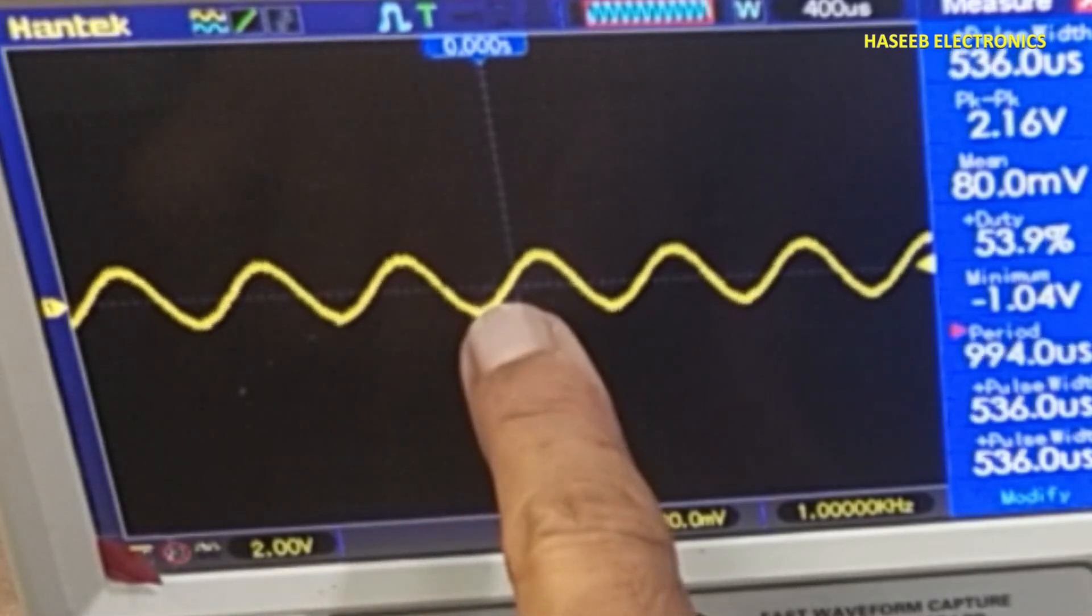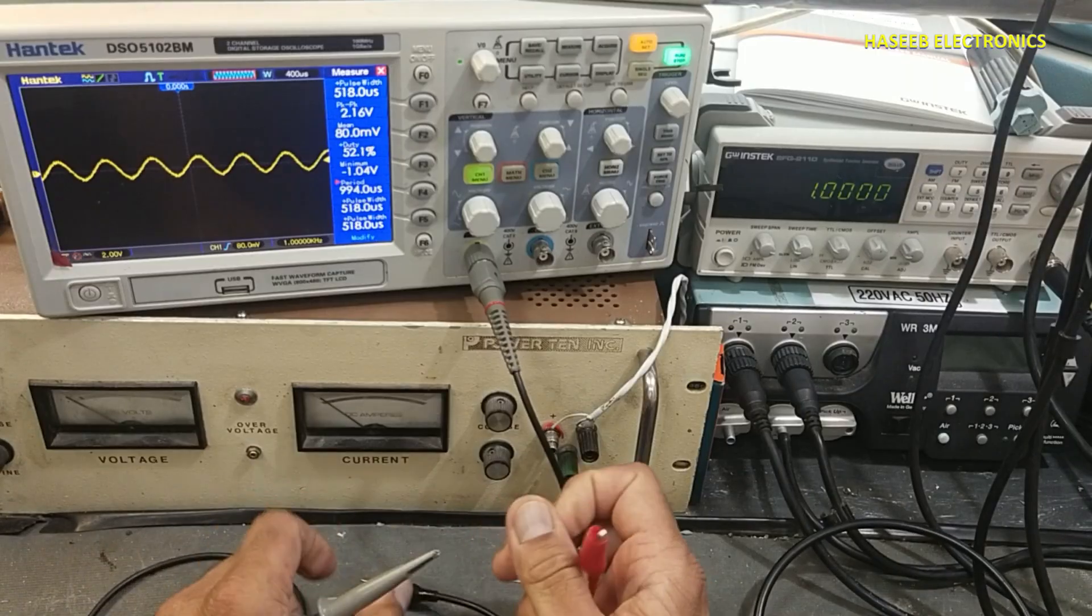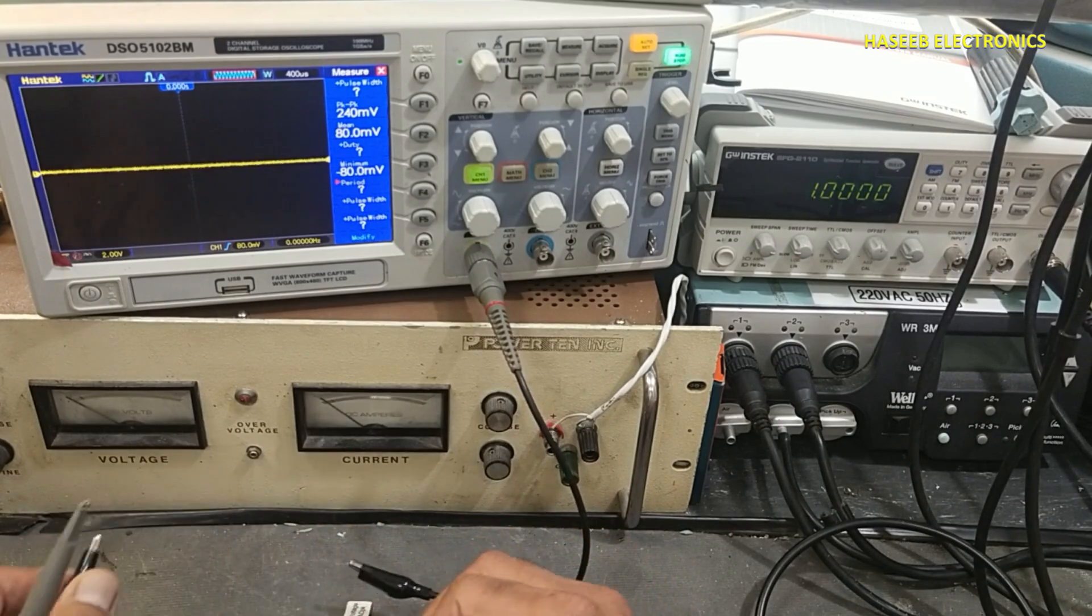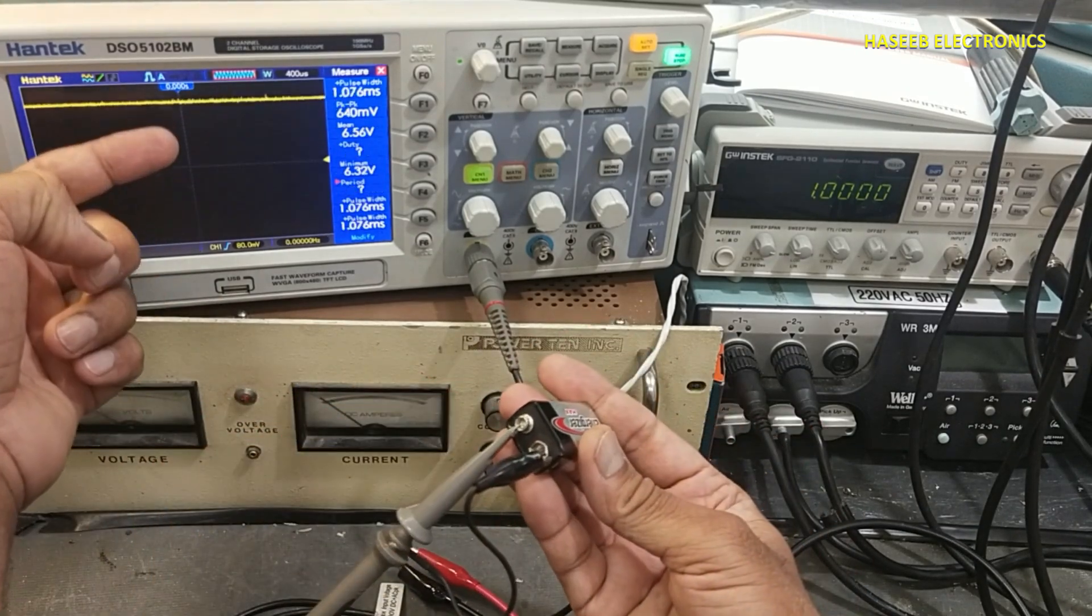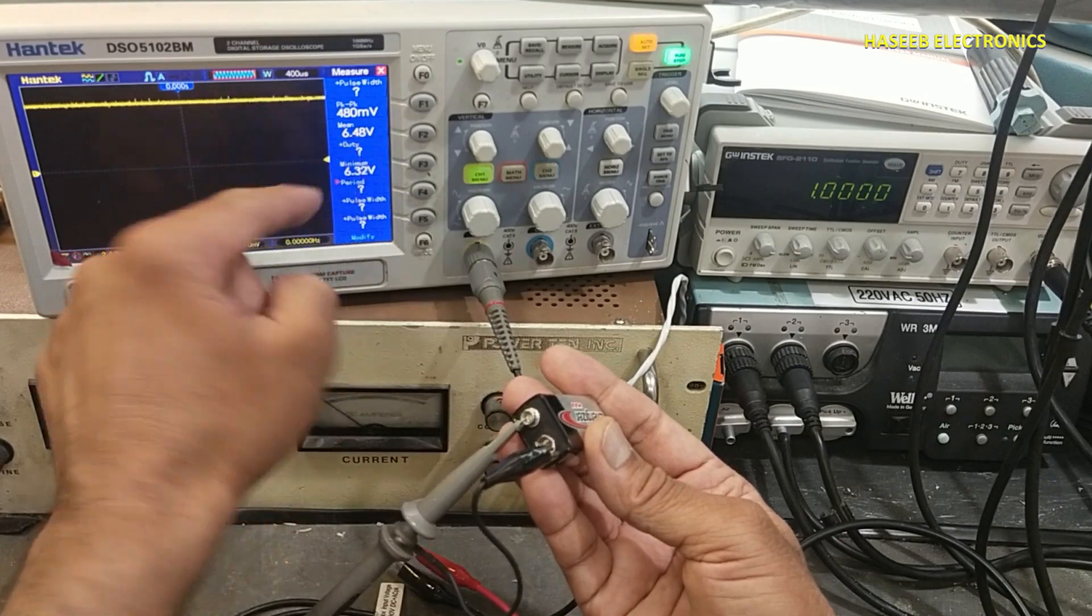When we measure any DC signal, it is showing in upside. It is 6.48 volt, zero to upside, this battery.